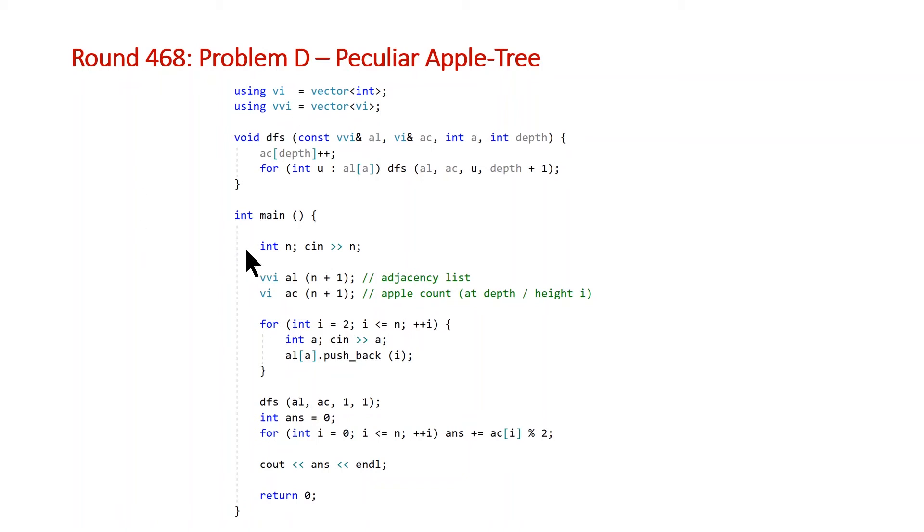So we come down to our main function, we'll come back to our DFS function in a second, and we initialize n and read that from our input. Then we declare our adjacency list which is a vector of vectors and our vector for keeping track of the apple count at each depth or height.